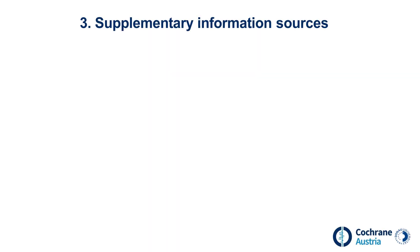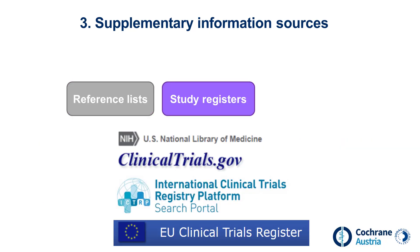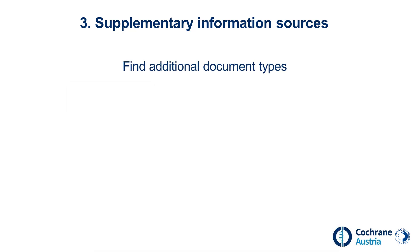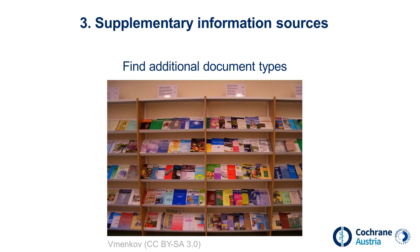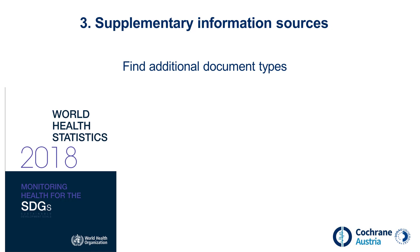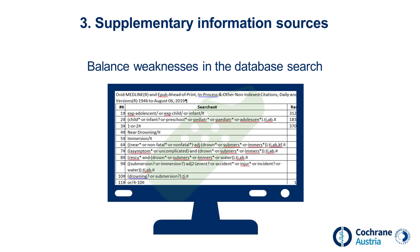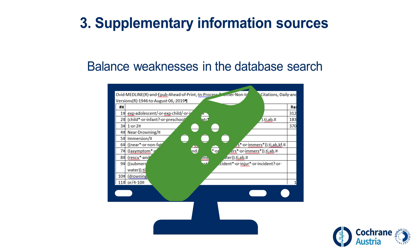Unfortunately, database searching alone is not sufficient. A systematic literature search also draws on supplementary information sources; the sources appropriate depend on the specific research question. Examples are screening of reference lists, searching in study registers, and contacting experts. There are several reasons to use such supplementary sources: to find additional document types such as reports of institutions, master theses or dissertations, and study register entries. Searching supplementary sources can also compensate for weaknesses of the database searches — for example, if relevant articles were not found because a search strategy missed some items.